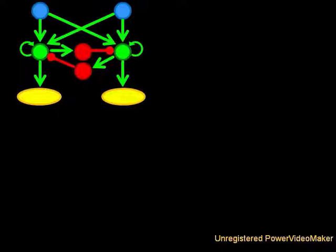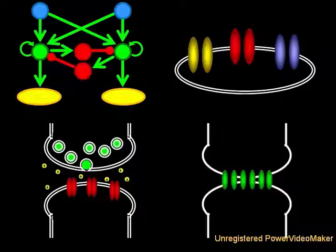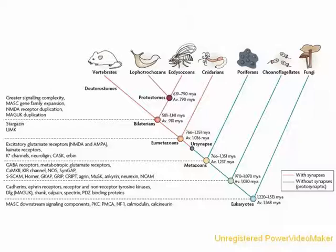So we have seen how complex neural circuits capable of learning, remembering, and deciding, composed of neurons expressing a suite of ion channels connected by chemical and electrical synapses, can evolve through a series of gradual, logical, and biologically plausible steps.